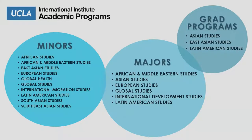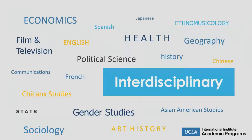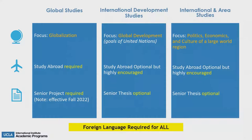We offer six majors, ten minors, and three graduate programs. Students may focus on a specific international region like Asia, Africa, Europe, the Middle East, or Latin America, or study topics related to global health, globalization, international development, or international migration. We are interdisciplinary programs, meaning students take courses across departments such as geography, political science, health, or sociology.